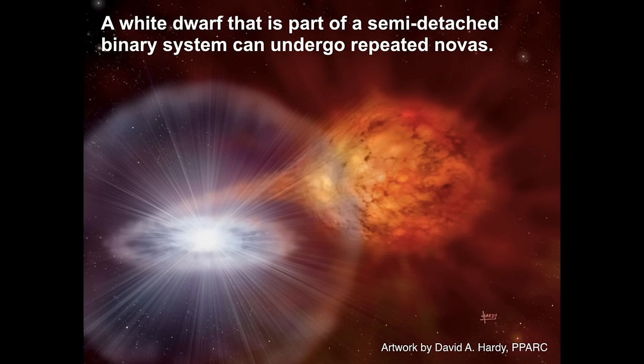Using Type 1a supernovae as standard candles, we can measure the expansion of the universe because that's the last step to figure out the expansion rate. We can calibrate to extraordinary distances since they're really bright and we know exactly that they reach the same peak brightness. If we catch them at their peak, we can measure the redshift of the galaxy in which they're embedded and thus measure the rate of expansion of the universe.